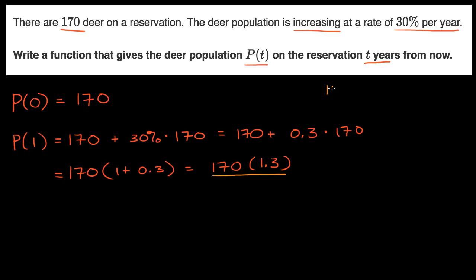...that means you keep your 100% that you had before and then you add another 30%. And so you would multiply your original quantity by 130%. And 130% is the same thing as 1.3.